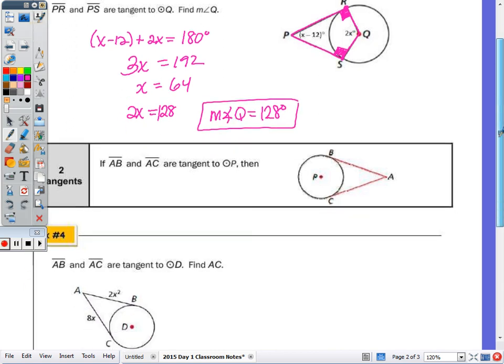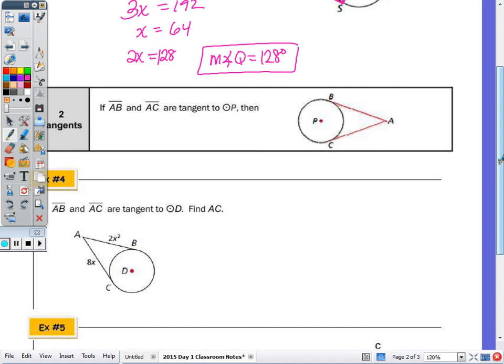Given two tangents to a circle from the same external point - looking at segments AB and AC, they share the common point A. When tangents are drawn from the same external point, their lengths are equal. So AB is congruent to AC.